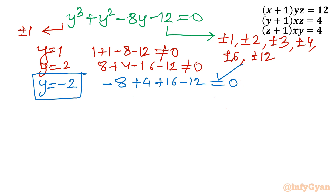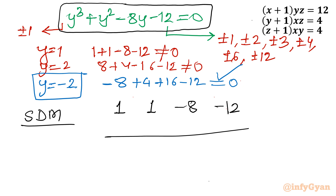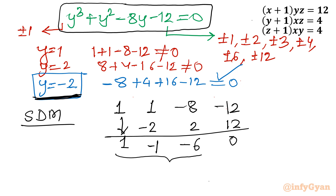Using synthetic division with root y = −2 and coefficients 1, 1, −8, −12: bring down 1; −2×1 = −2, add to get −1; −2×(−1) = 2, add to get −6; −2×(−6) = 12, remainder 0. This gives the quadratic factor y² − y − 6 = 0.